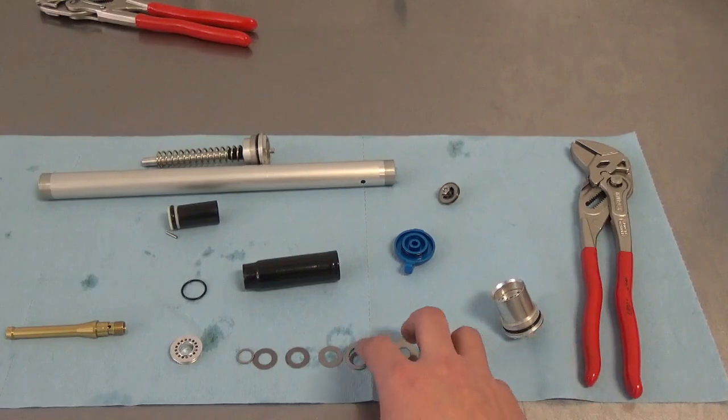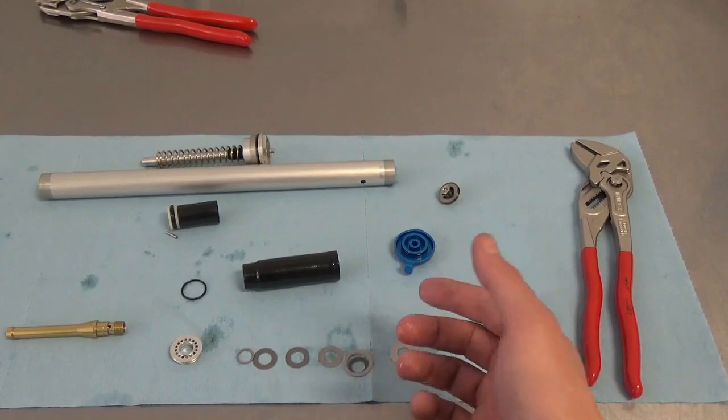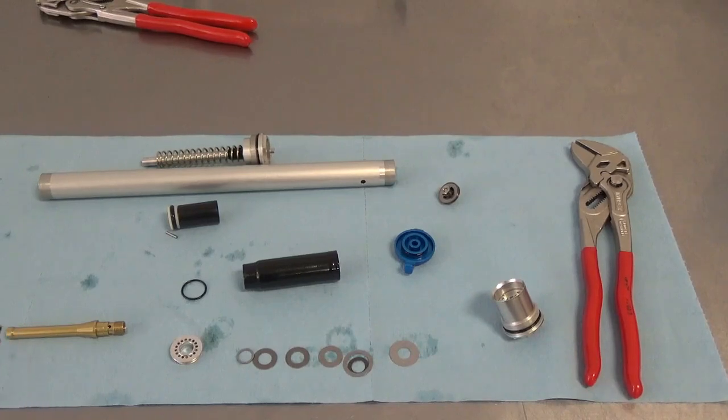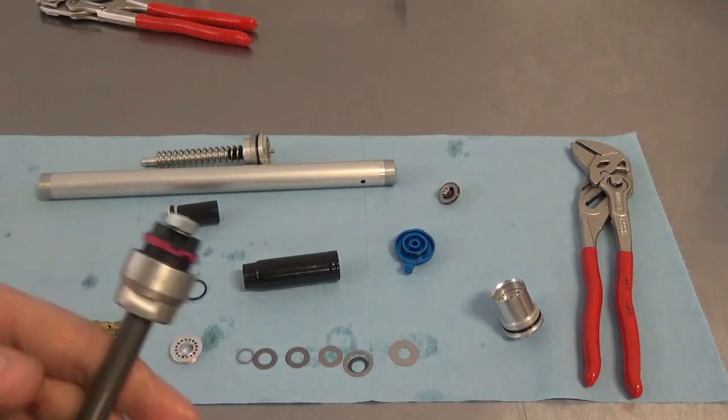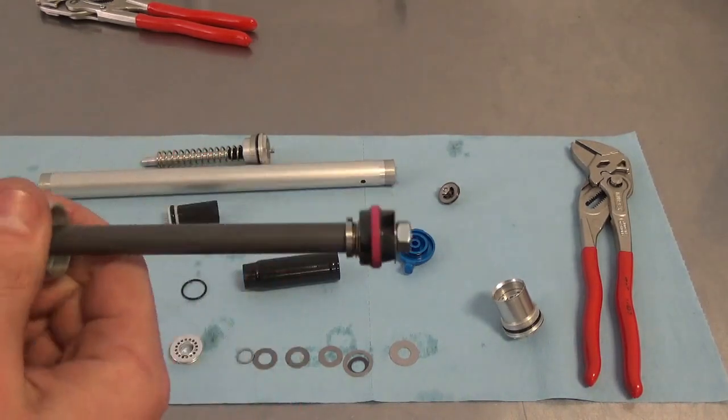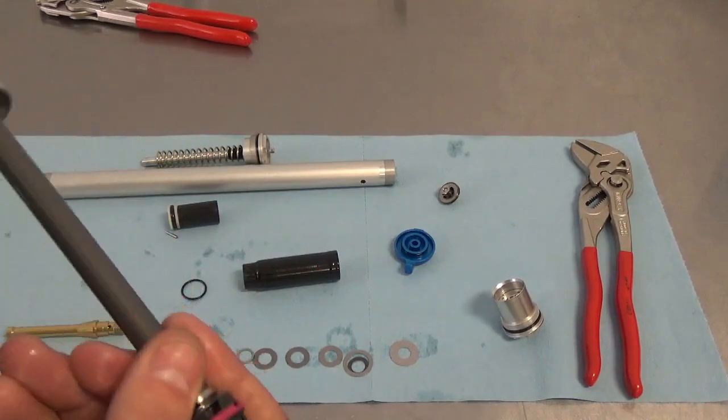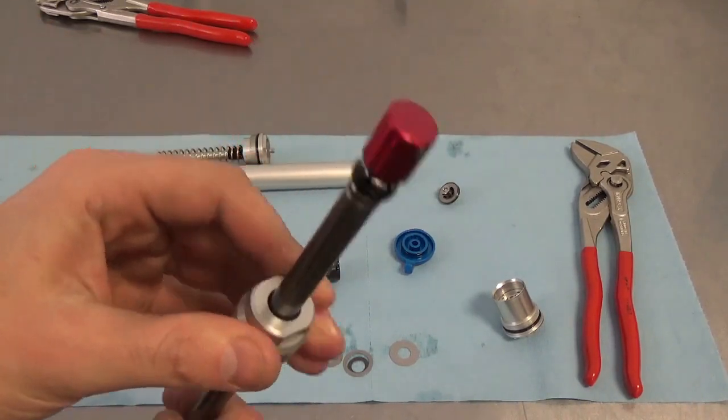The other big difference here, obviously, is that this has a much more conventional shim stack. This is a ring shim setup in this particular fork. But very similar to what Fox use across a lot of their different Fit cartridges. The exception being the RC2. The other advantage that the Fit cartridges have at the moment is that they have an SKF seal head in here.